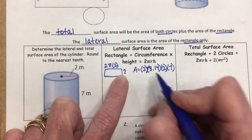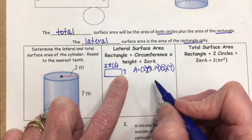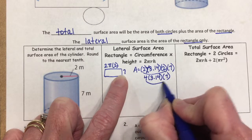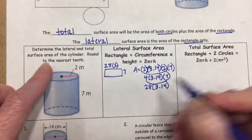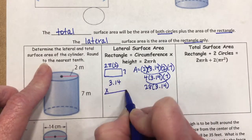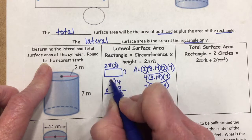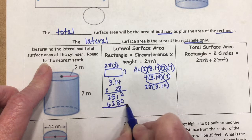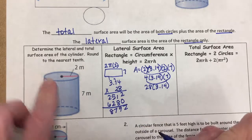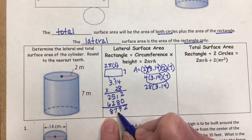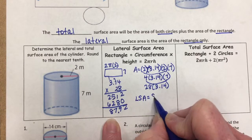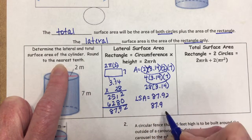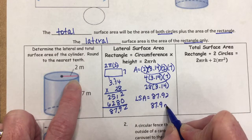To find the lateral surface area, multiply 2 times pi times 2 times 7. Simplifying: 2 times 2 is 4, times 7 is 28, then 28 times 3.14 equals 87.92. Rounded to the nearest tenth, the lateral surface area is 87.9 square meters.